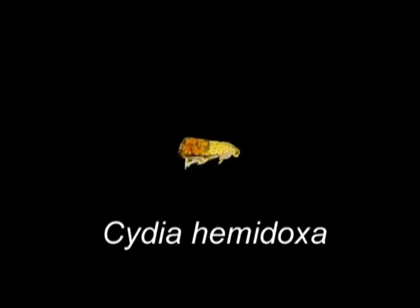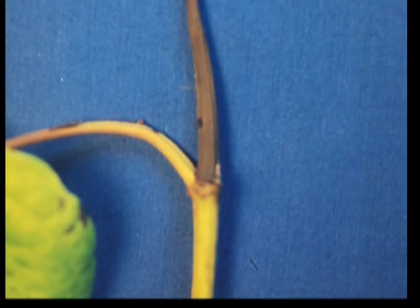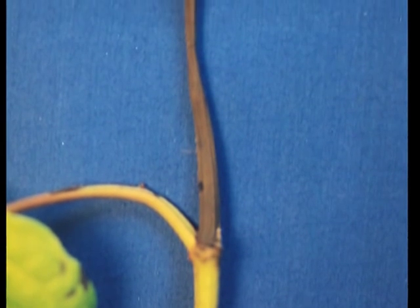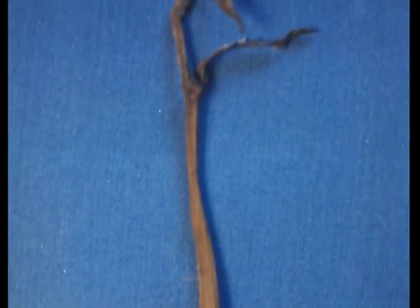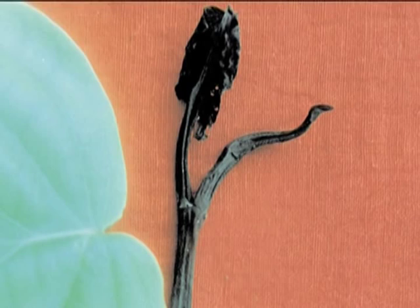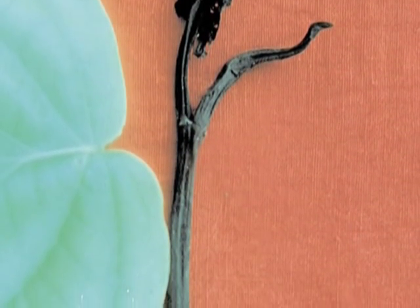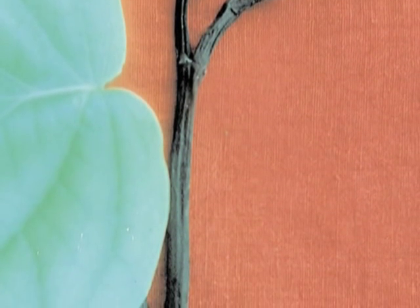Top shoot borer or Cydia hemidoxa is a serious pest of young pepper plants, reported from India and prevalent in all pepper growing areas. The adult is a tiny moth with crimson and yellow forewings and grey hind wings. The female moth lays eggs in the terminal tender shoots. The emerging larva scrapes the surface and bores into the terminal shoots, feeding on the internal tissues. This results in blackening and decaying of affected shoots. When successive new shoots are attacked, the growth of the vine is affected.